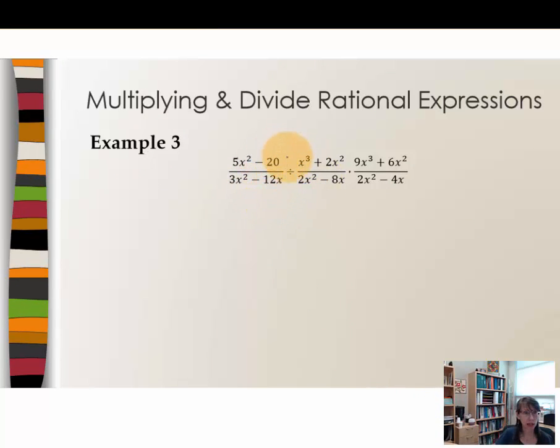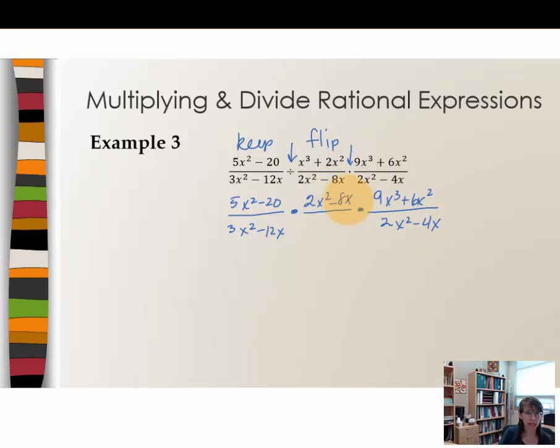Here we have an example of division and it's also involving some multiplication. So the first thing we want to do is rewrite this in the proper form. We're going to have 5x² - 20 divided by 3x² - 12x stays the way it is. Division will change to multiplication. So only this middle term, this middle rational expression will flip. The last one does not flip because multiplication is what precedes it. So we're keeping 9x³ + 6x² divided by 2x² - 4x. It's only this middle rational expression that flips. So 2x² - 8x is now the numerator and x³ + 2x² becomes the denominator.